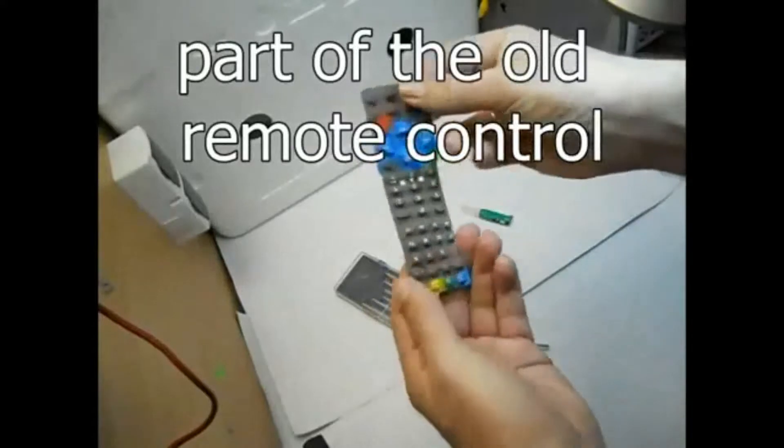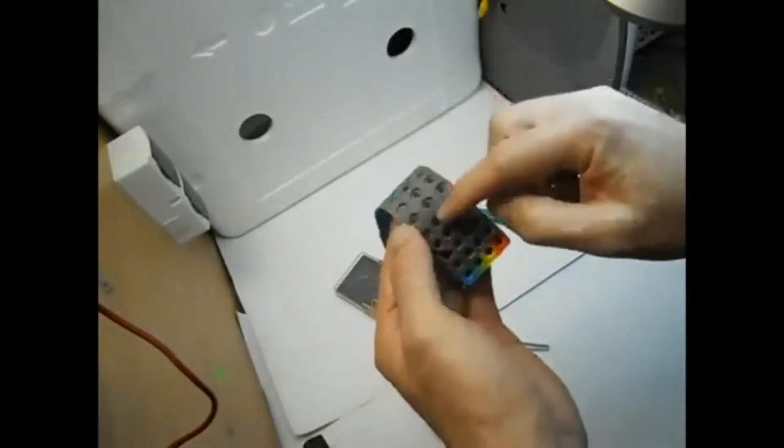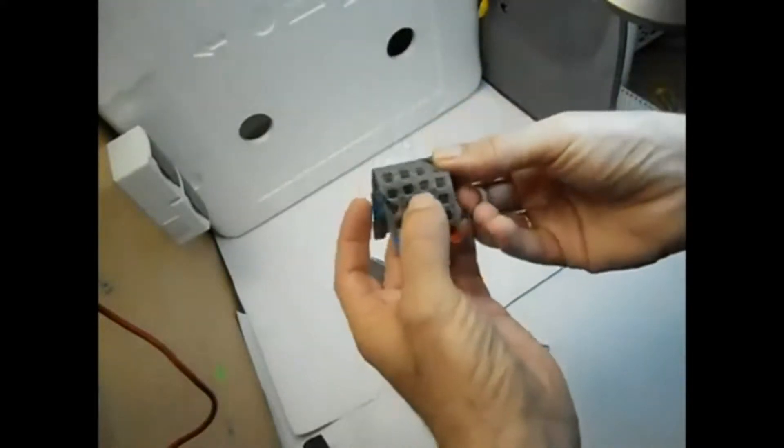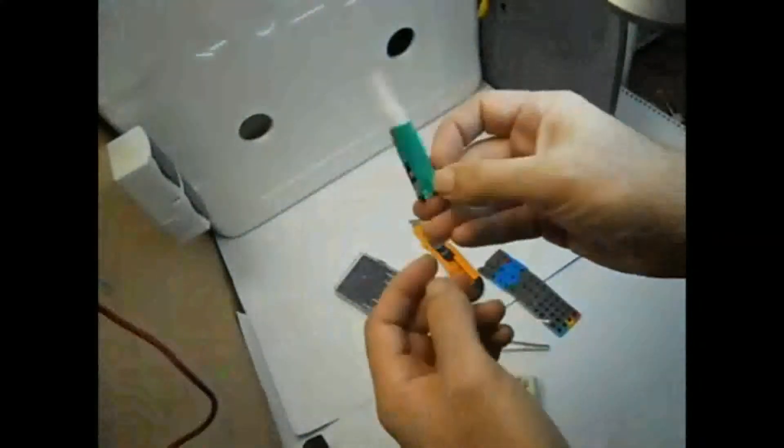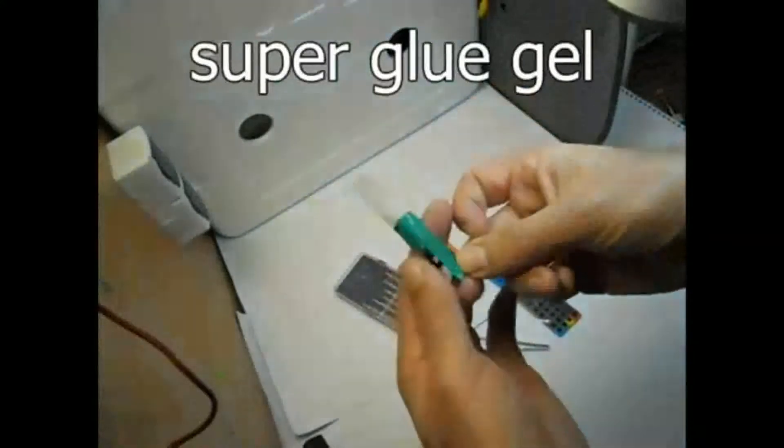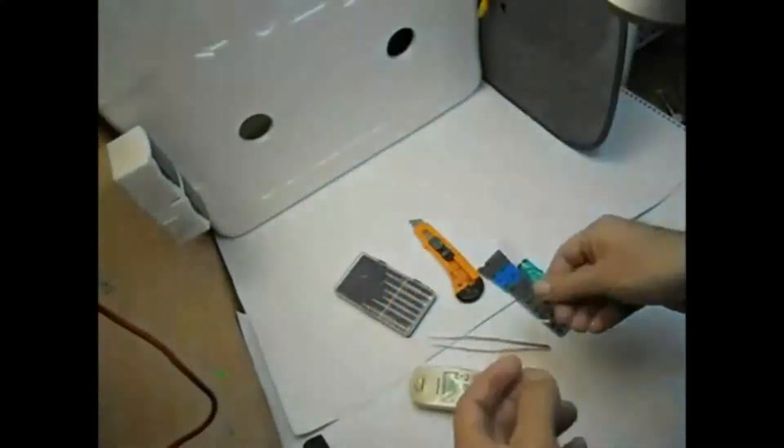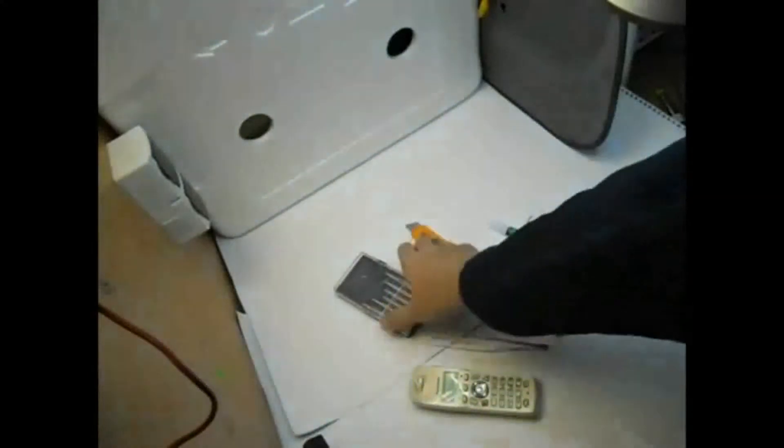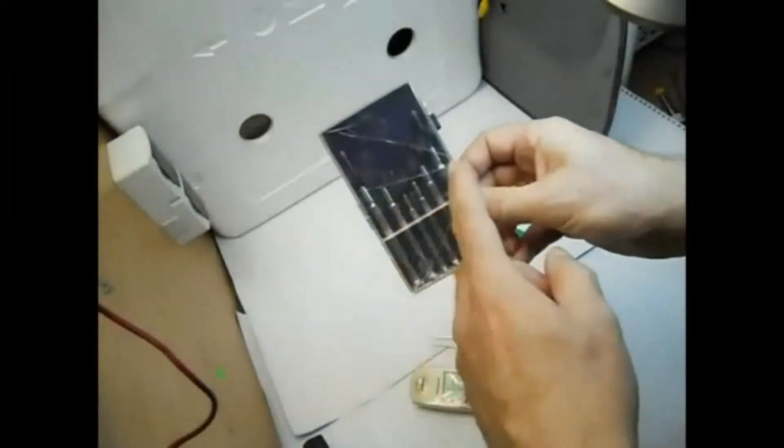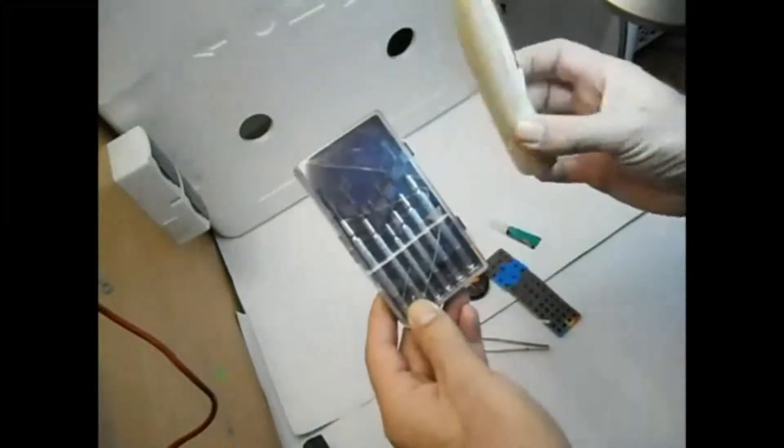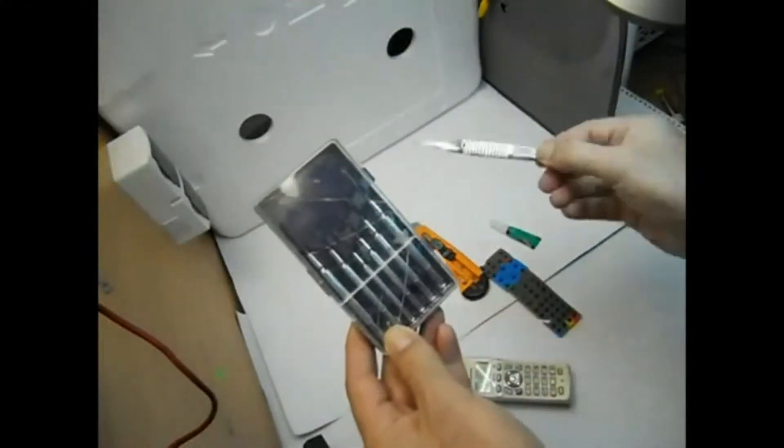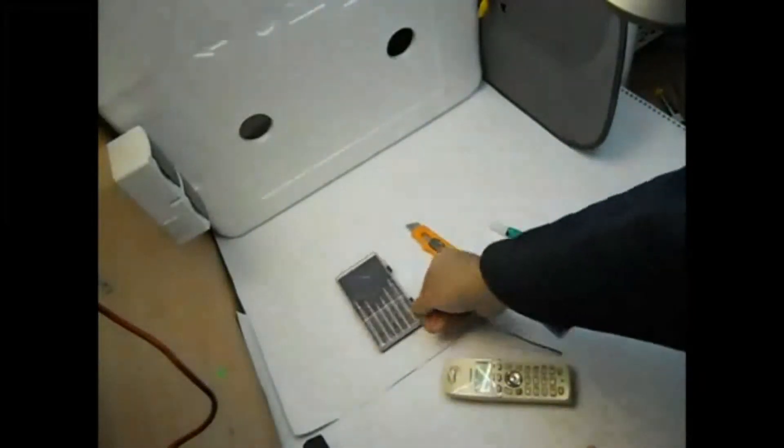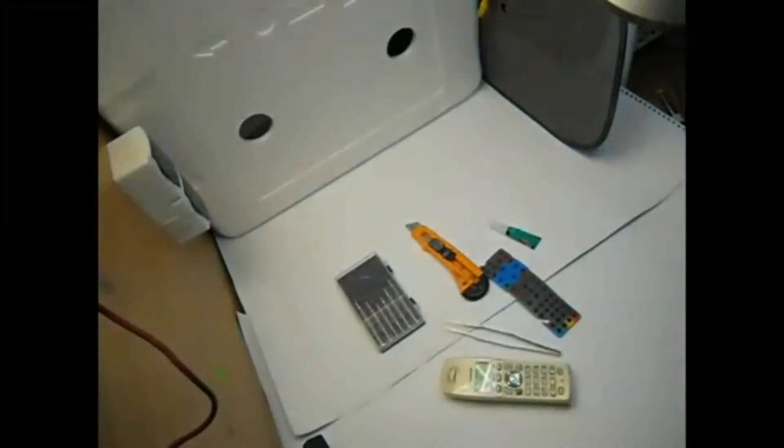We need a keyboard from a remote control and we'll use some contacts from that. We need super glue gel, screwdrivers to open the phone, pin sets, and a cutter. Now we start working.